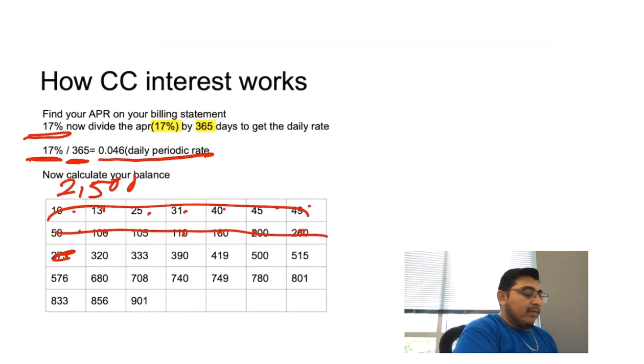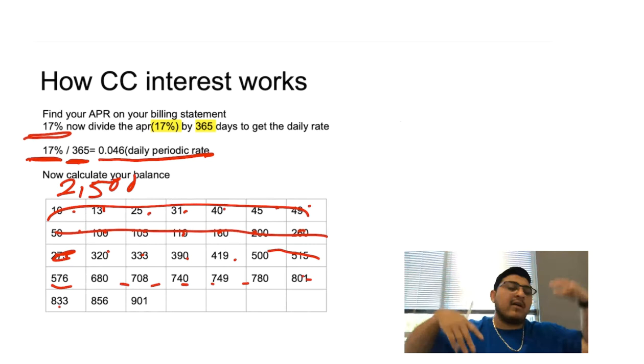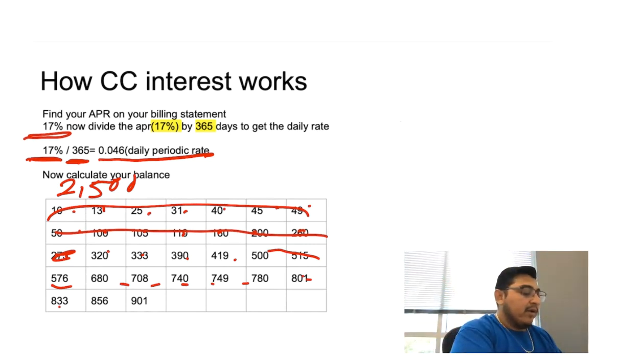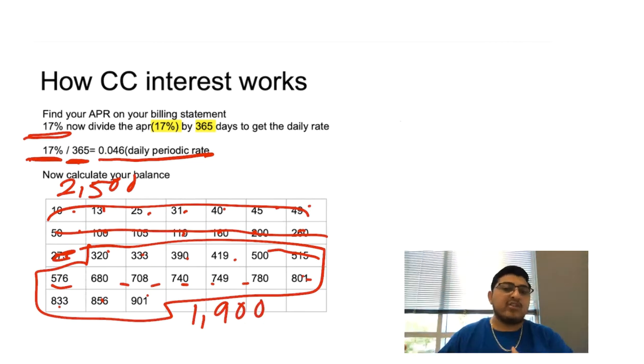Now let's say on day 16, 17, throughout the month you started using the credit card - $5 here, $10 here, $40 here, $100 here, whatever. You ended up adding extra more debt on your credit card. Let's say that for these 15 days you made a total of $1,900 of extra purchases.